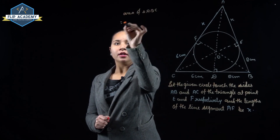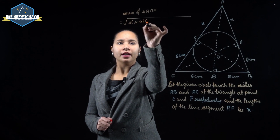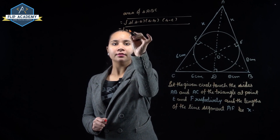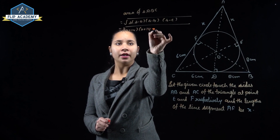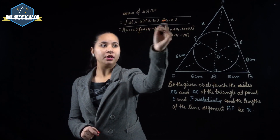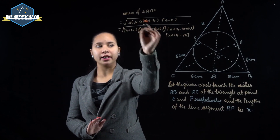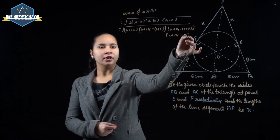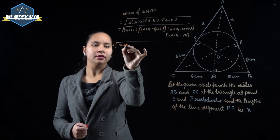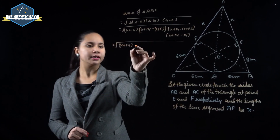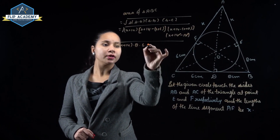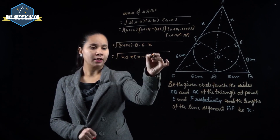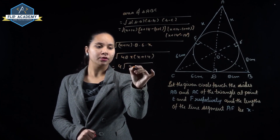The area of triangle ABC by Heron's formula equals √(S · (S−a) · (S−b) · (S−c)). Substituting S = X+14, a = X+6, b = X+8, c = 14, we get √((X+14) · 8 · 6 · X), which simplifies to √(48X(X+14)), equal to 4√(3X(X+14)).